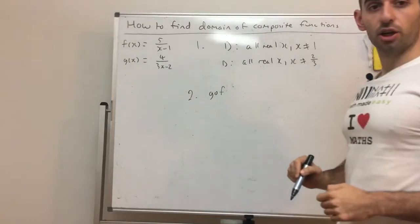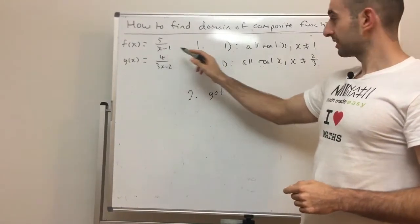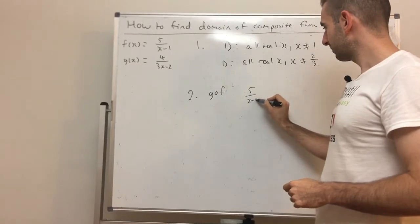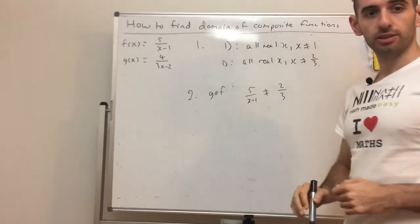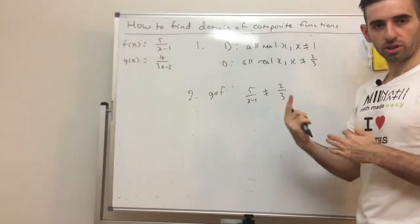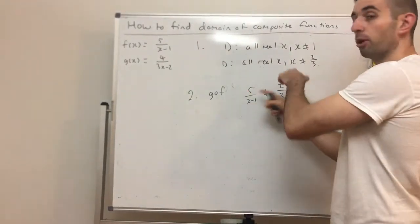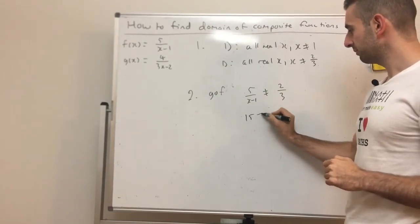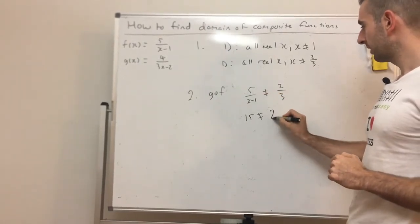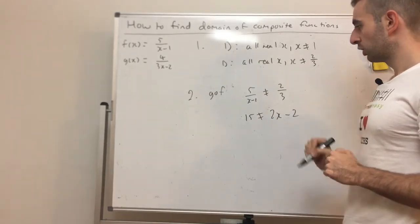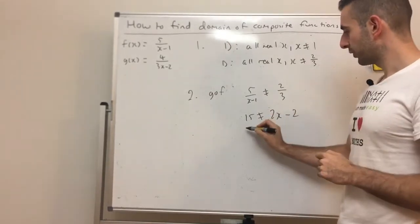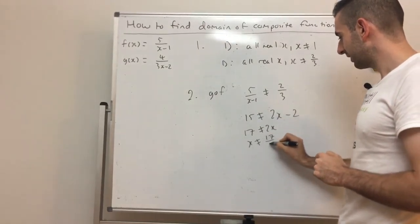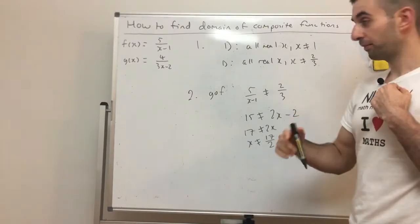Now let's do g∘f. This time we sub f(x) into the domain restriction of g. So 5/(x−1) ≠ 2/3. To solve this, I'll cross-multiply: 3×5 = 15 cannot equal 2×(x−1), which gives 2x−2. Taking the 2 over, we get x ≠ 17/2.